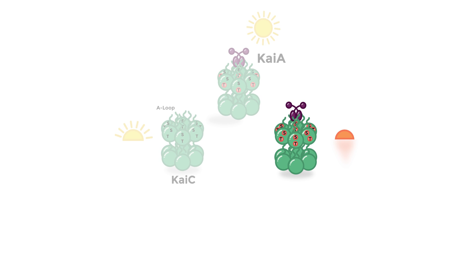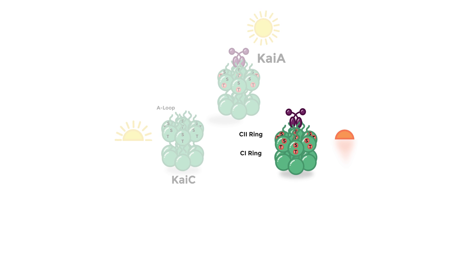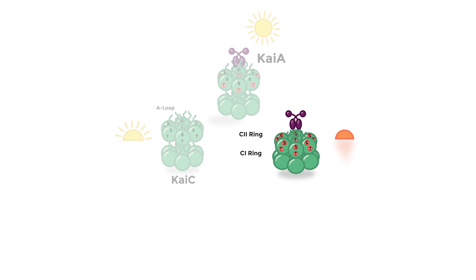By dusk, both the threonine and serine residues of KaiC are phosphorylated. C2 ring stiffness results in increased interaction between the C1 and C2 rings, causing the C2 ring to stack onto the C1 ring. The A-loop recedes inside the C2 ring, hiding the binding site for KaiA. C2 and C1 stack so tightly that C1 starts to bulge, exposing the B-loop on C1, which is the binding site for KaiB.